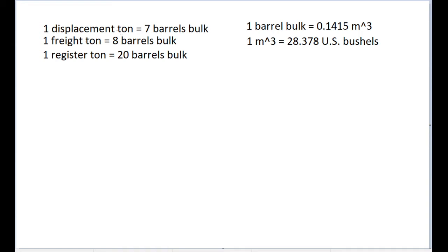So if the person who said they wanted 73 tons of M&Ms meant displacement tons, then how far off will we be if we interpret them to mean freight tons or register tons instead as a mistake? And the problem also asks us to specify the distance, the difference in terms of U.S. bushels.